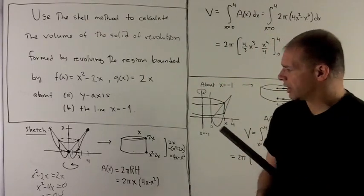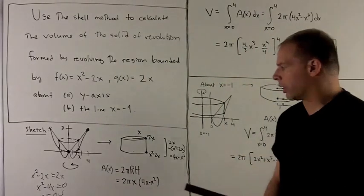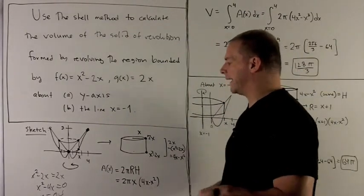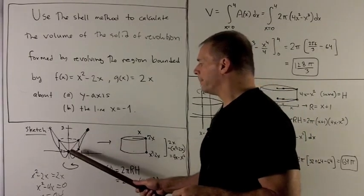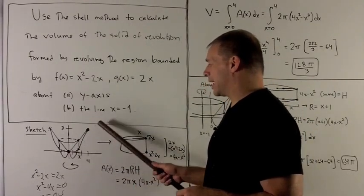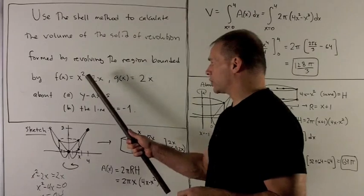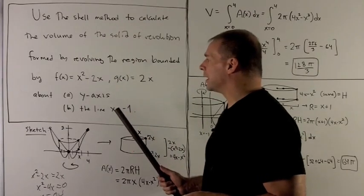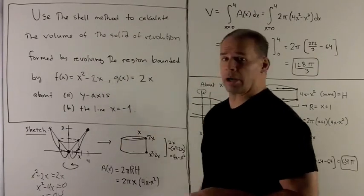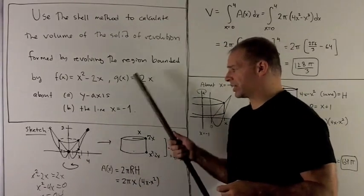I can plot everything for 2x. So we'll have the point (0,0) and the point (4,8). That's where they agree. 2x is a line, so I connect the dots. And then x² - 2x is a parabola.